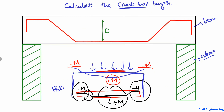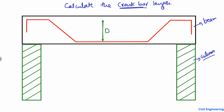Now let's take a beam with two columns and find out the crank bar length. Let's suppose D is the distance — the height of the crank bar. We can see there is a small portion which is the concrete cover at the bottom, and also a concrete cover at the top. So D is the height of the crank bar excluding the concrete cover — it is the clear depth from the bottom reinforcement to the top reinforcement.